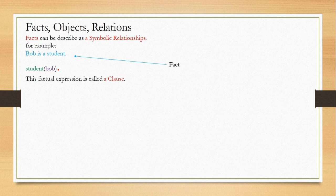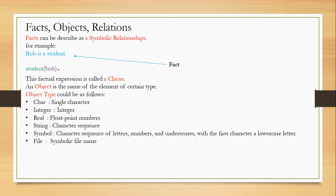Now, what are objects and relations all about? First, object means a name of an element of certain type. Here, Bob is a name, and this name is actually a string type. There are six different types of objects: character for denoting a single character, integers for integer numbers, real for floating point numbers, strings for character sequences, symbol for character sequences of letters, numbers, underscores written in lowercase letters, and file for symbolic file names. These are the six different types of objects. Anything within the parenthesis that we are passing is called the argument, and that argument is what an object is.